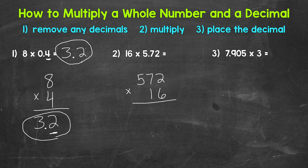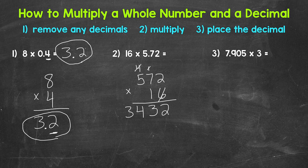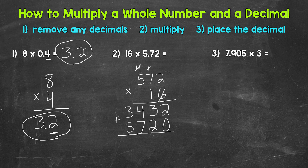Now we multiply. We'll start with six times two — that's twelve. Then six times seven is forty-two, plus one is forty-three. And six times five is thirty, plus four is thirty-four. We are done with the six, moving over a place to the left to the one, so we need our placeholder zero. One times two is two, one times seven is seven, and one times five is five. Now we add: two plus zero is two, three plus two is five, four plus seven is eleven, one plus three is four, plus five is nine. So we end up with 9,152.